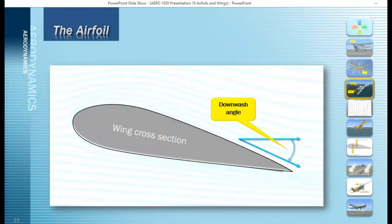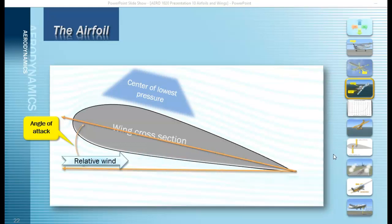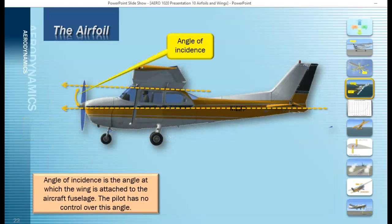Downwash is the downward motion of the air that flows over and underneath the wing. The angle of attack is the angle between the relative wind hitting the airfoil and the cord line. The center of pressure is the area on the wing where you have the greatest amount of low pressure producing lift. The angle of incidence is the angle at which the wing is attached to the fuselage — the angle between the cord line of the wing and the longitudinal axis of the aircraft. The pilot has no control over this angle; it's a fixed angle.